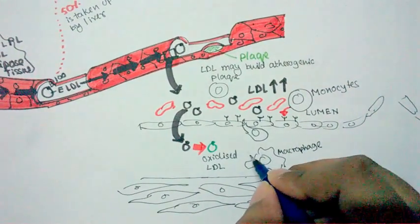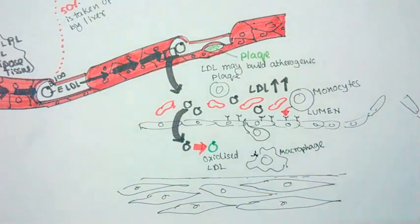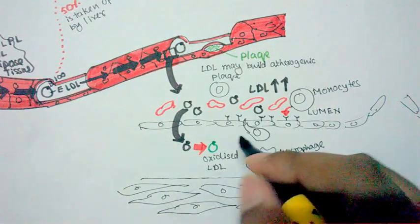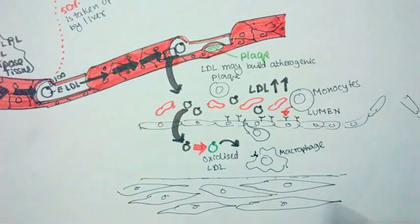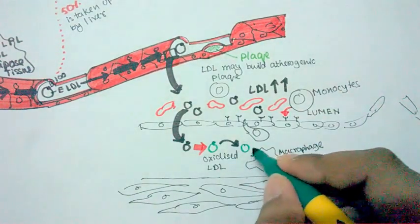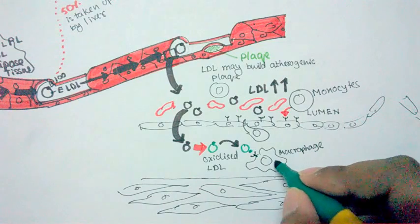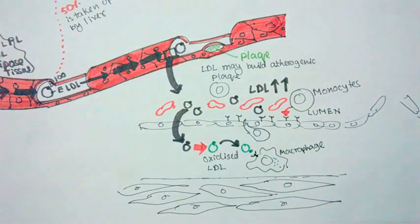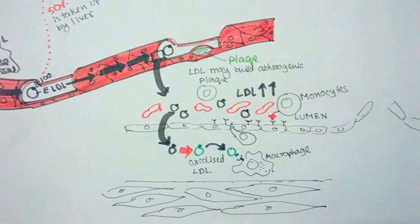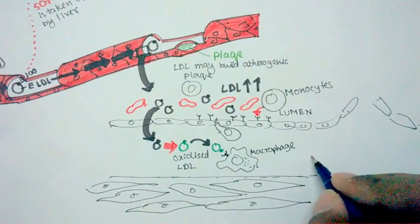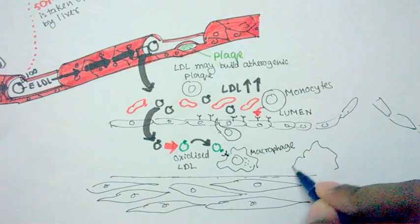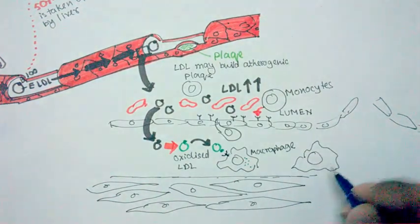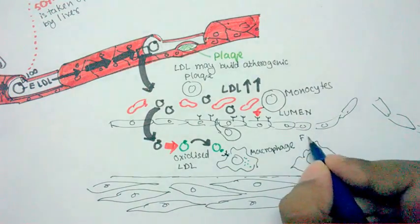Once inside the sub-endothelial space, the monocyte becomes a tissue macrophage. Macrophages have scavenger receptors, and these scavenger receptors can take up the oxidized form of LDL. When a macrophage takes up a lot of oxidized LDL, it becomes a specific type of cell known as a foam cell.